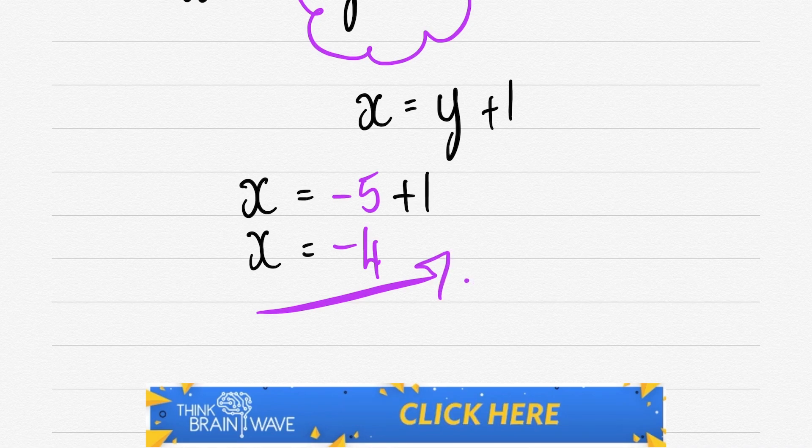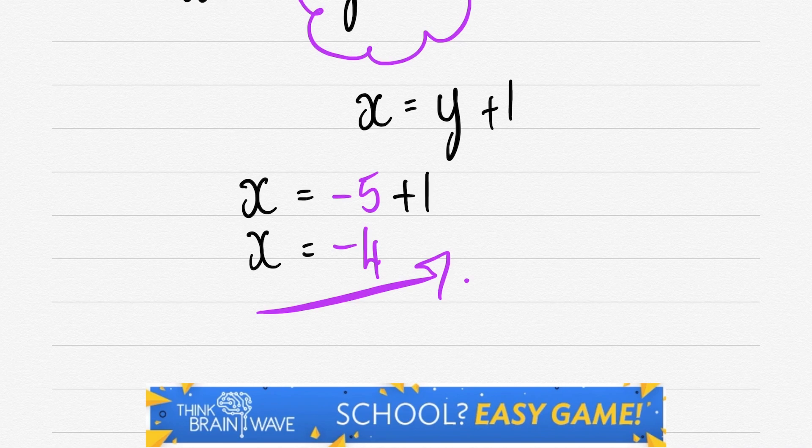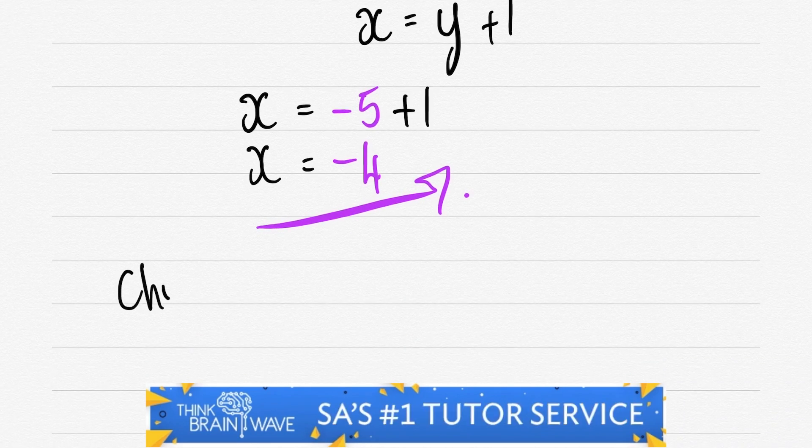Now we have two answers. We've got y is equal to five. And we have x = -4.